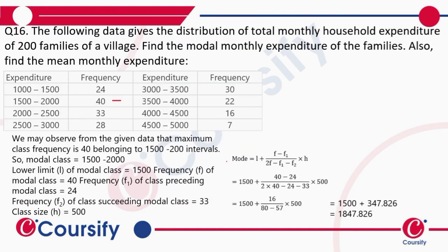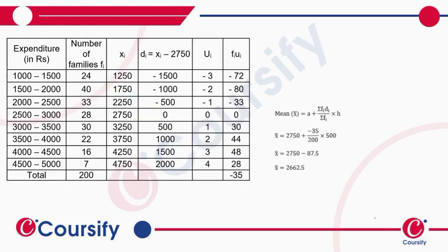So f will be 40, f1 will be 24, and f2 will be 33. Putting in these values, we get the mode as ₹1847.826. For the mean, we use the step deviation method.